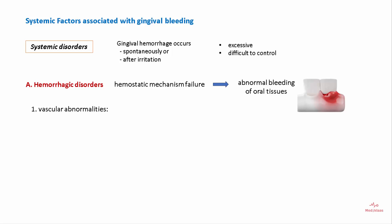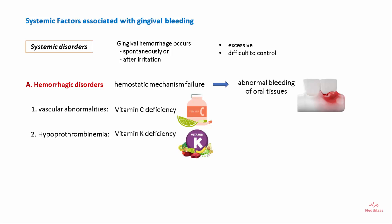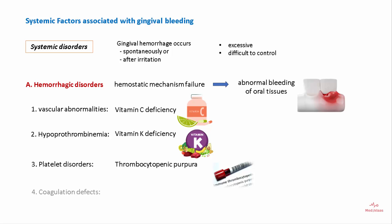Hemorrhagic disorders include vascular abnormalities like vitamin C deficiency, hypoprothrombinemia such as vitamin K deficiency, platelet disorders like thrombocytopenic purpura, and coagulation disorders like hemophilia and multiple myeloma.